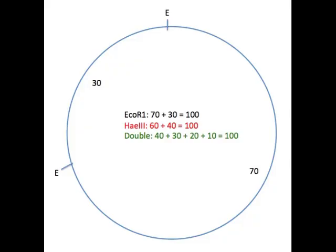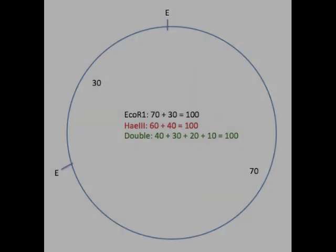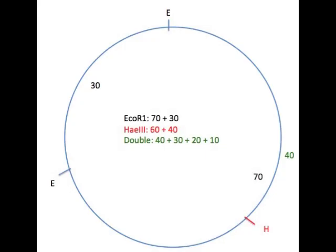As you can see, the 30 kilobase fragment is found in the double digest. So, we're going to try to retain that. By trial and error, place the second enzyme sites in the large fragment so that you get the appropriate sized fragments for the double digest.